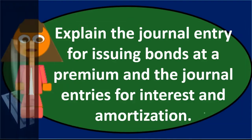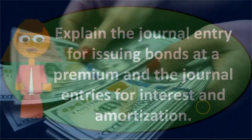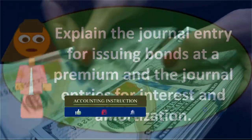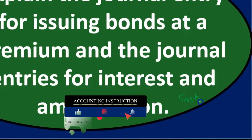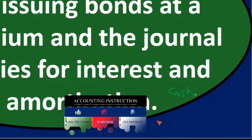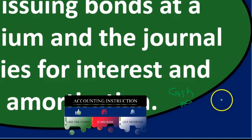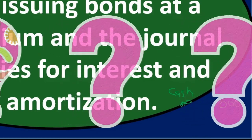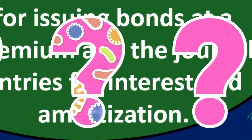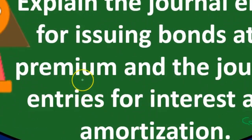When we issue the bond, we're trying to get cash, so we're going to debit cash. Then we'll have the bond payable, which is a liability — those two things are pretty straightforward. Bonds are often issued in terms of thousands, so think of it as a $1,000 bond.